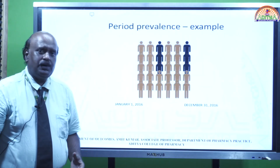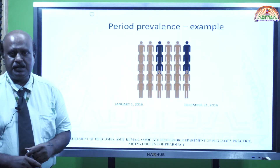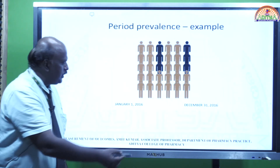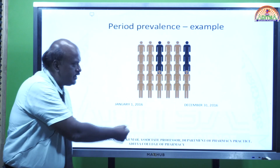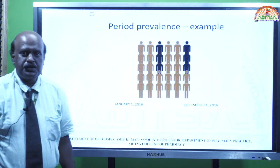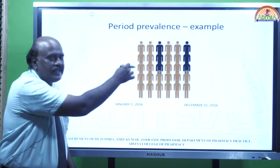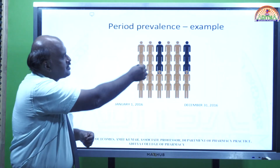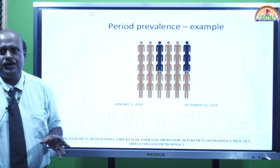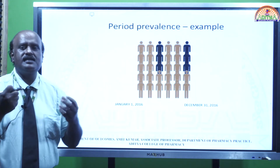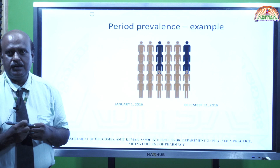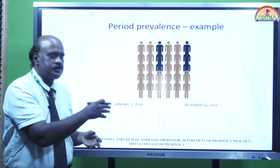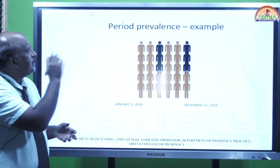This image explains period prevalence. For a period of 12 months from January 1, 2016 to December 31, 2016, in a population of 30 members, we have six members who are diseased — these six members are old plus new cases. Since it covers the time period from January to December, it is called period prevalence.